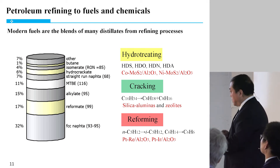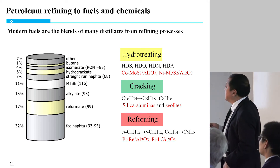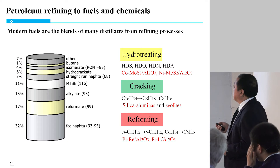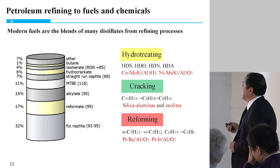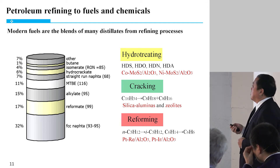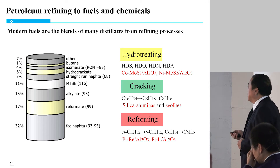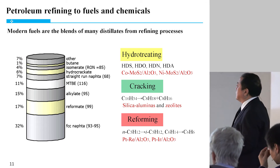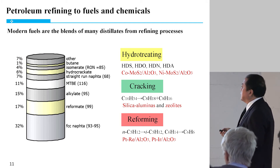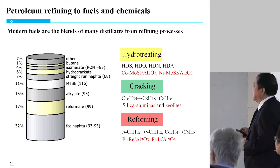Another technology package is the refining of fuels and chemicals. Modern fuels are a blend of many distillates from refining processes. The key processes are based on three categories of catalysts: hydrotreating, cracking, and reforming. If you look at one tank of gasoline, it comes from different distillates and different catalytic reactors.